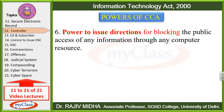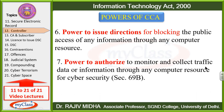The reason can be in the interest of the country, in the interest of the state, in the general interest of the public. The seventh point is power to authorize monitoring and collecting traffic data or information through any computer resource for cyber security — Section 69B. Cyber means a world of interconnected computers. Controller can authorize monitoring and collecting traffic data — jo traffic data chal raha hai usko monitor karo aur collect bhi karo — through any computer resource for cyber security. Cyber security ko mazboot karne ke liye controller kisi ko authorize kar sakta hai ki tum inke data ya information ke traffic ko monitor karo aur collect karo.